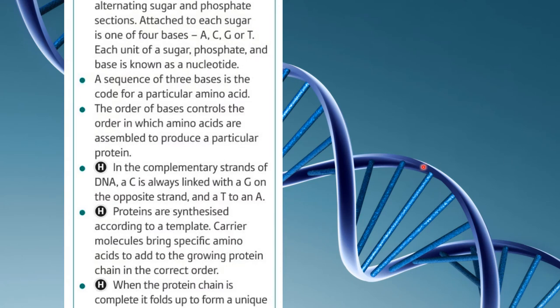The key points from today's learning are that DNA is made of alternating sugar and phosphate sections, and attached to each sugar is one of four bases: adenine, cytosine, guanine, or thymine. They will always link in the same pairs — cytosine with guanine, thymine with adenine. In RNA, adenine joins with uracil instead of thymine. A sequence of three bases codes for one particular amino acid, and the order of bases controls what order amino acids are assembled in to make a particular protein.